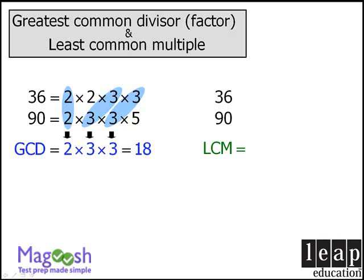Now let's find the least common multiple of 36 and 90. Once again, we need the prime factorization of each number.